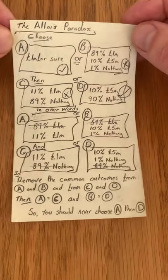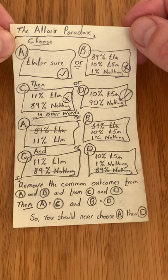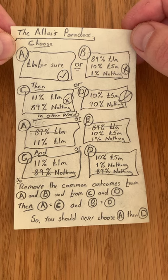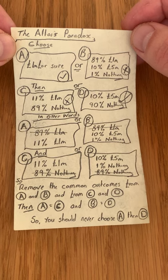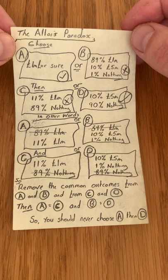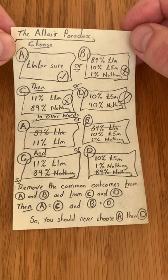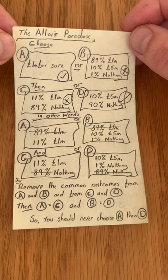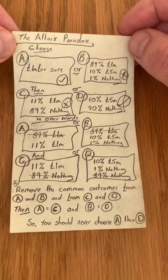This first one — behavioural economics on the post-it number one — is called the Allais paradox, named after Maurice Allais, a very famous French economist who presented these ideas in the early 1950s. These were probably the first empirical observations in what later became known as behavioural economics, and the Allais paradox has proven to be very influential.